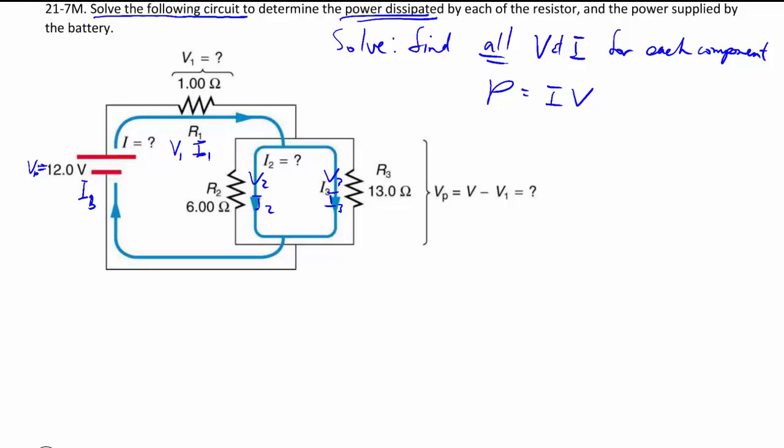You see, notice that there's a split here. So this group here is purely in parallel. So I can replace this with some kind of parallel resistance and then I'll redraw the circuit.